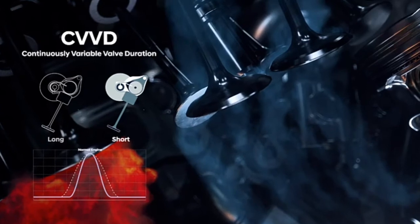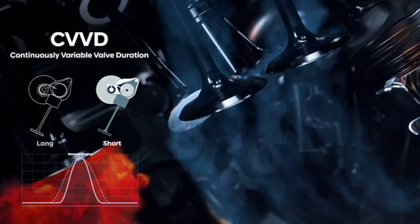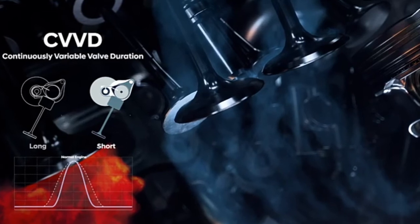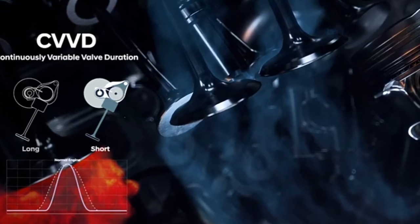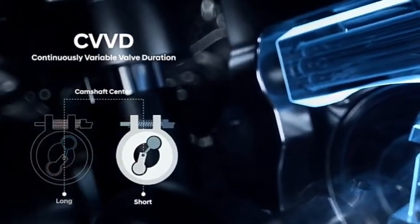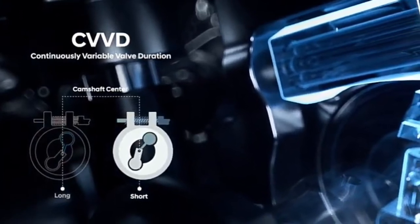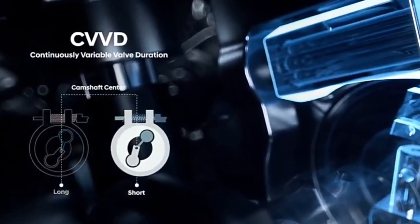Sonata's CVVD engine is the result of nine years of research and development. It is a purely mechanical system that is able to provide continuously variable duration. That means it can change the valve duration for every change in the RPM range of the internal combustion engine.